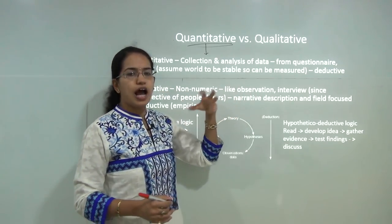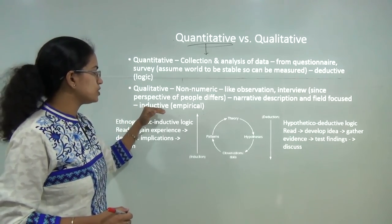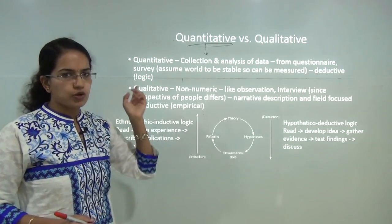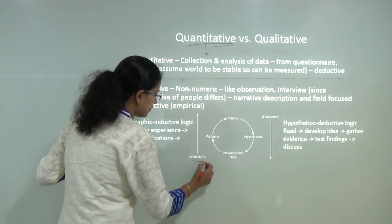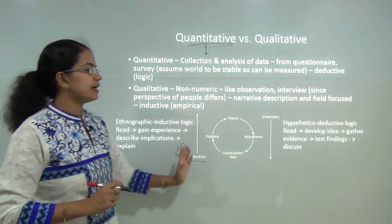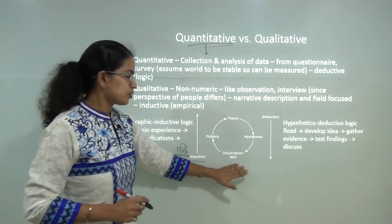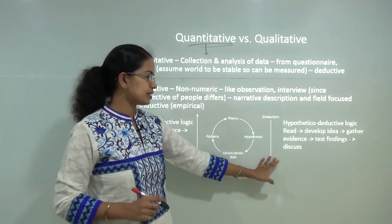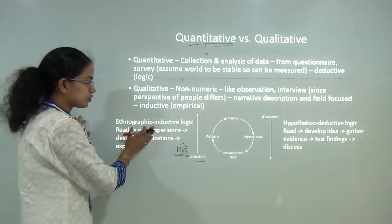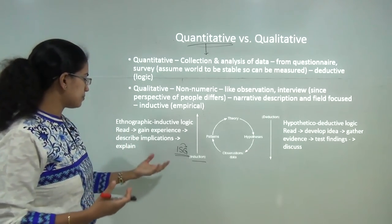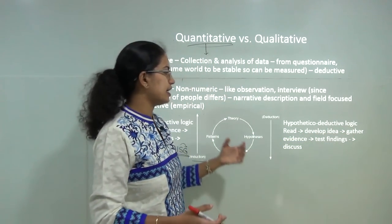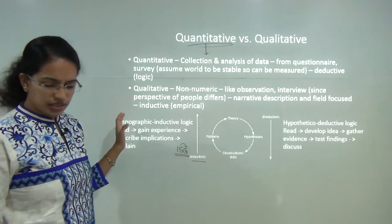Qualitative assessment is more narrative and field-focused, and the approach is inductive or empirical. Under quantitative, the approach is deductive or logical. A quick recap: inductive moves from specific to general — we call it ISG. Under the deductive approach, we move from theory to data and back to theory. Under inductive or ethnographic logic, we read, gain experience, describe implications, and explain. Under hypothetical deductive logic, we read, develop the idea, gather evidence, test findings, and discuss them.